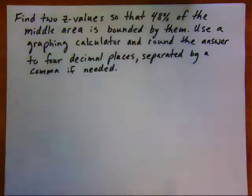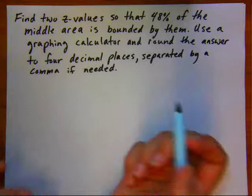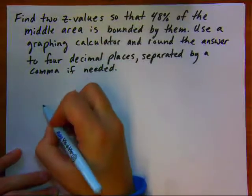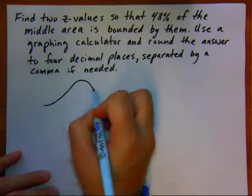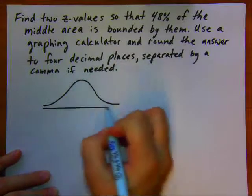Here's another example. Find two Z-values so that 48% of the middle area is bounded by them. Use a graphing calculator and round the answer to four decimal places, separated by a comma if needed. Again, we're working with Z, so it's a standard normal distribution. Draw your curve. Label your mean at 0.